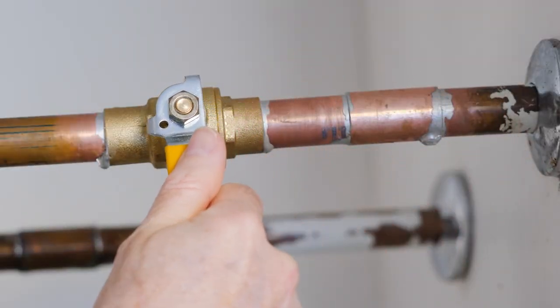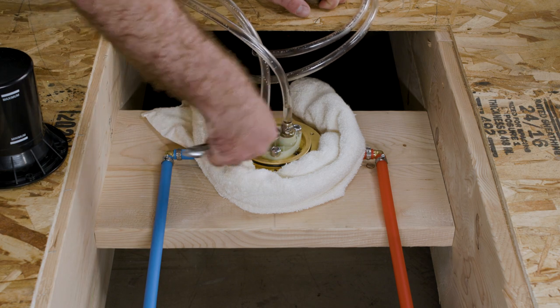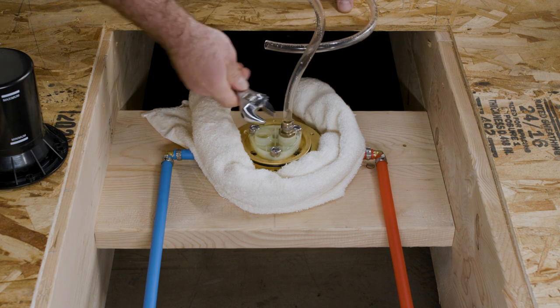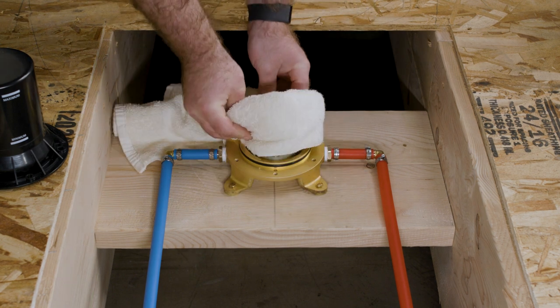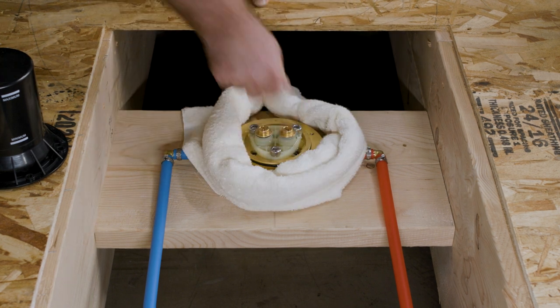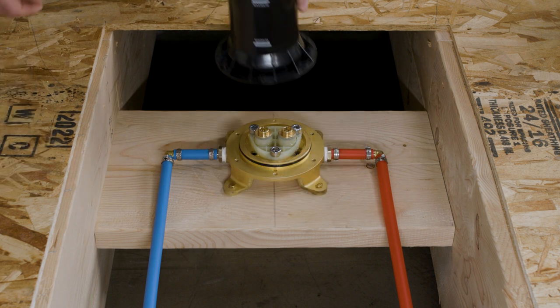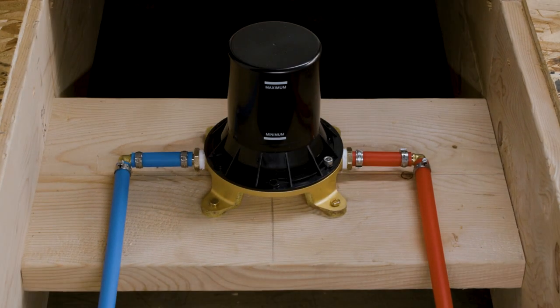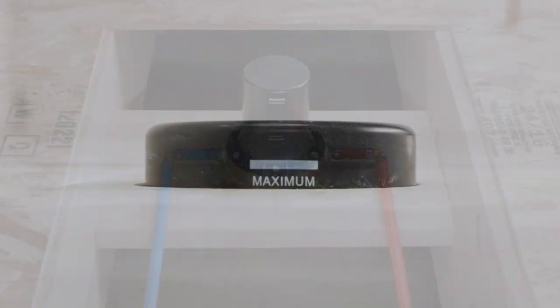Turn off the water supply valves. Remove the hoses and adapters using the towel to catch any residual water in the hoses. Reattach the test plugs into the valve outlets. Reattach the Plaster Guard to the valve. Now the finished floor can be installed.